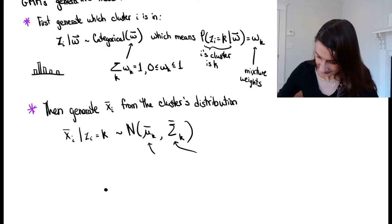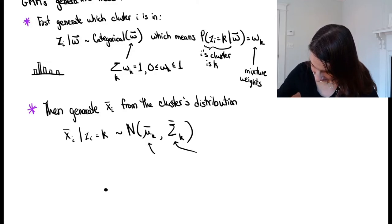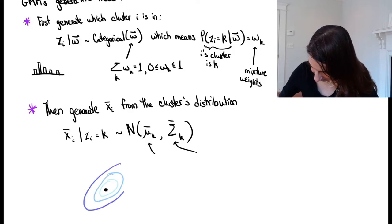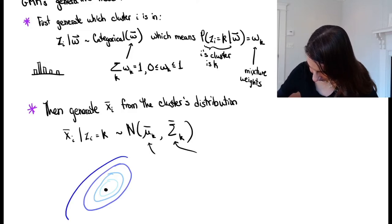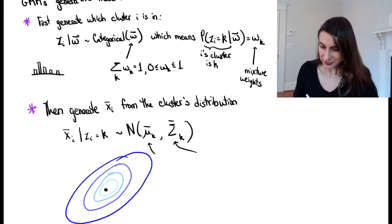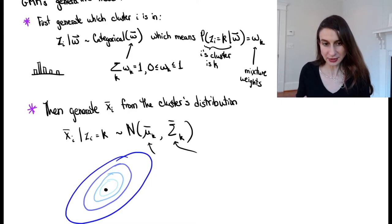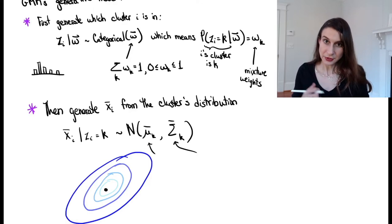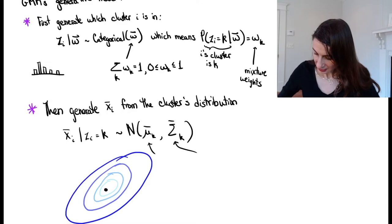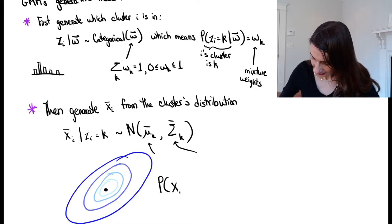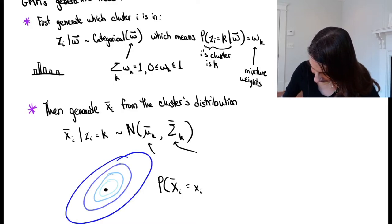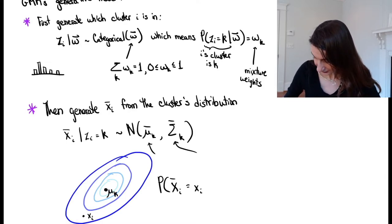Let me draw you an example. Given the cluster center and its covariance, you can compute the probability that x_i equals a specific value. So maybe that specific value is out here, and here's the center mu_k for cluster k.